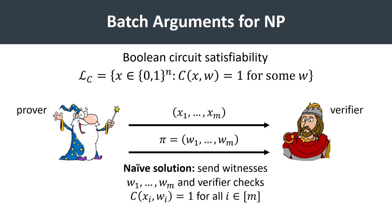A simple approach is to have the prover send over a collection of m NP witnesses, one for each statement. The verifier then checks that each statement-witness pair is valid and accepts if all of them are. In this case, the size of the proof scales linearly with the number of instances.